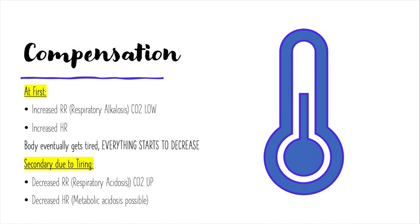When the body can no longer compensate, breathing slows, the heart rate stops beating excessively, and everything continues to slow down. Once CO2 is retained, respiratory alkalosis turns into respiratory acidosis. This is because retaining excessive carbon dioxide makes the patient hypercapnic — 'capnic' referring to carbon dioxide. When the respiratory rate is decreased, carbon dioxide is retained, equaling respiratory acidosis.